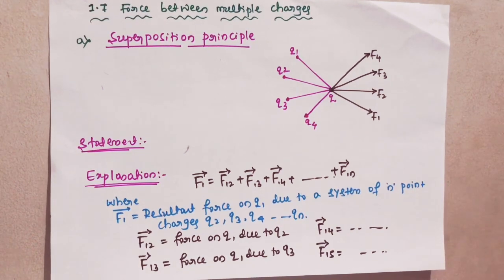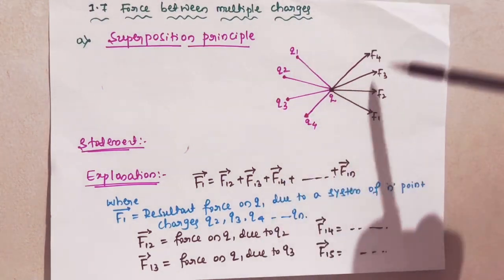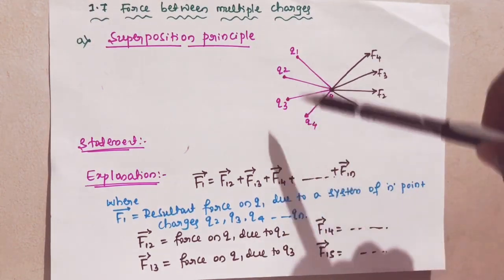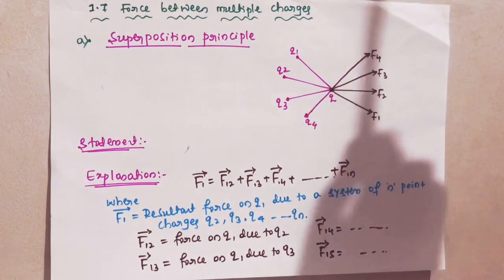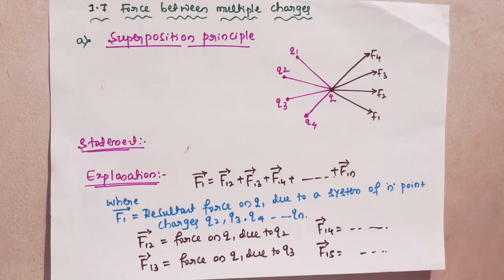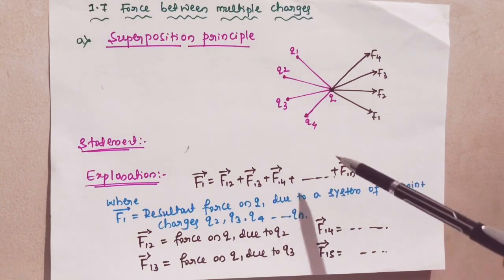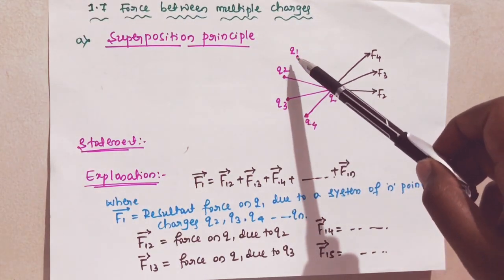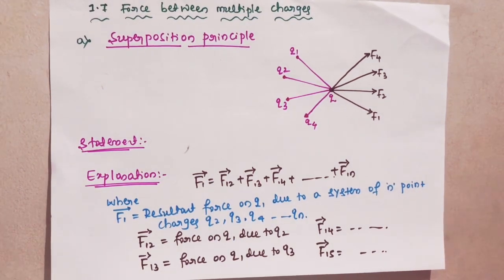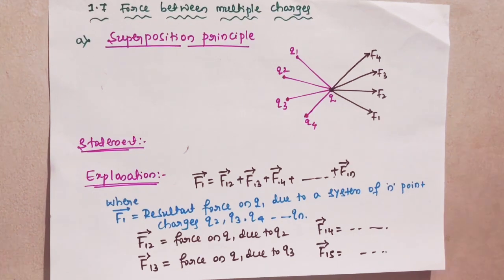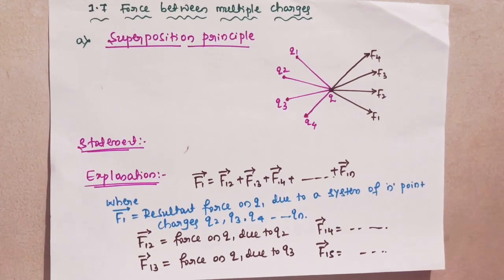See that diagram — this is one system. It contains n number of point charges q1, q2, q3, q4, and so on up to qn. According to that principle, the net force on the charge q1 — suppose if I consider this is q1 — the net force on this charge q1 is due to a system of n charges.